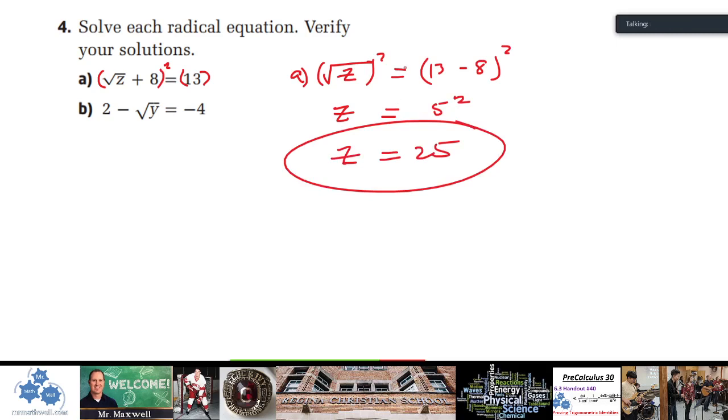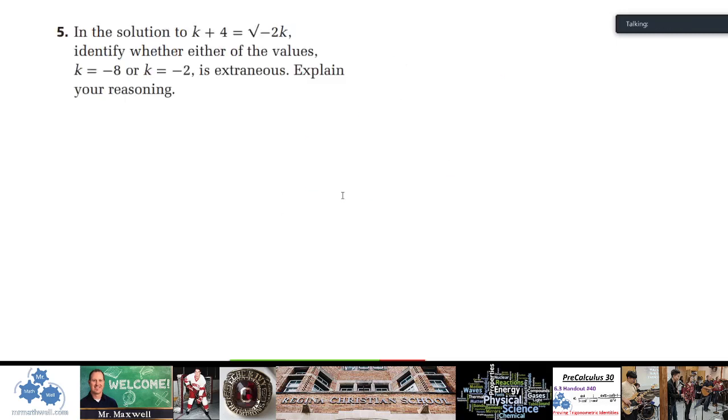Did you have a question? I have a question about number 5. All right. Somebody asked about number 5 here in the solution to k + 4 = √(-2k). Now notice that you do see a negative underneath the root sign. But k, if k was negative as well, then we'd be okay. So it's not a bad situation automatically to have a negative under there. There would be possible values that would make this positive. So identify whether either of these values, k = -8 or k = -2, is extraneous. Explain your reasoning.